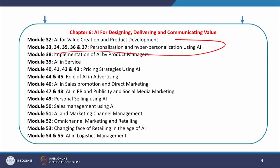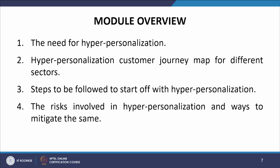Welcome to this NPTEL online certification course on artificial intelligence and marketing. We will talk about module 36, discussing personalization and hyper-personalization with the help of artificial intelligence. This is part 4 of that discussion. We will cover the need for hyper-personalization, the customer journey map for different sectors, the steps to start with hyper-personalization, and the risks involved along with how to mitigate those risks.